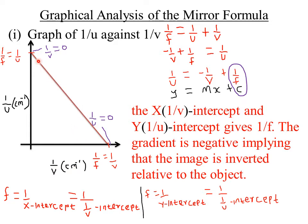Because the graph will always be a straight line graph, we have to compare it with the equation of a straight line. From mathematics, the equation of a straight line is y = mx + c, where y represents the y-axis, m represents the gradient or slope, x represents the horizontal axis, and c represents the y-intercept.